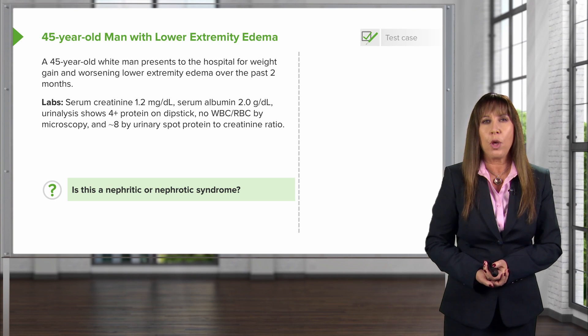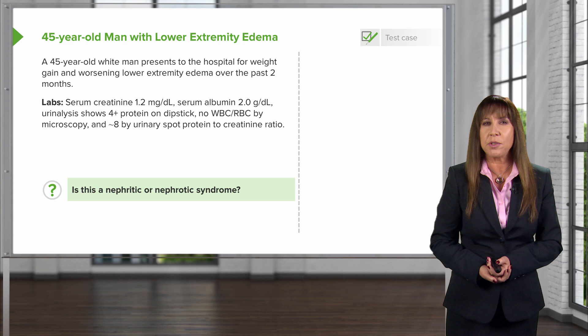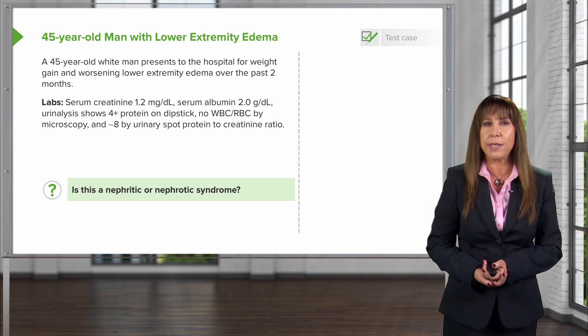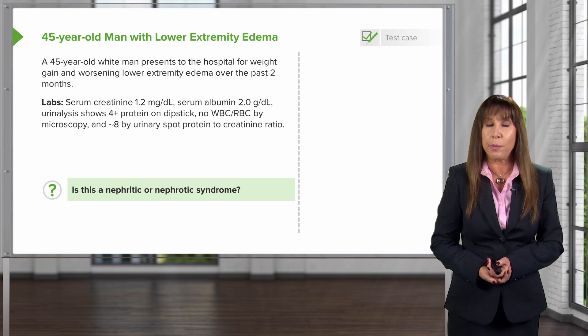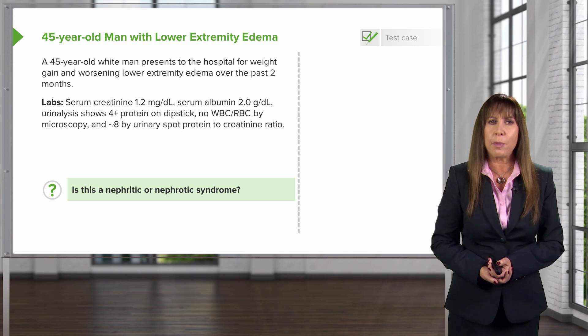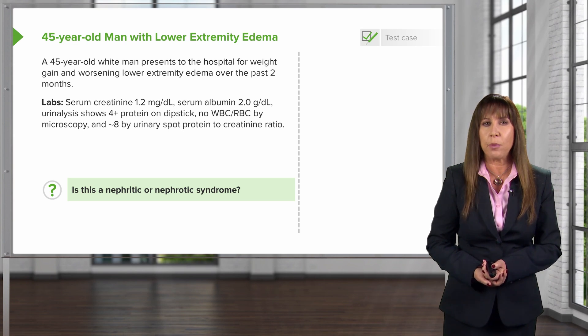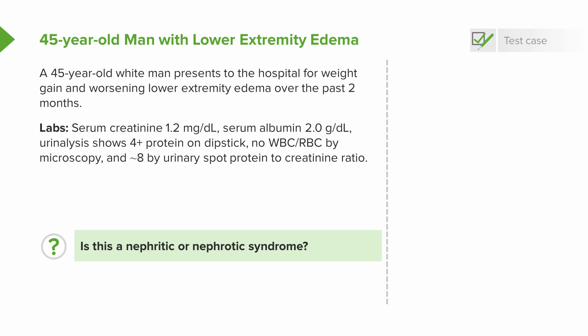We have a 45-year-old gentleman who presents to the hospital with weight gain and worsening lower extremity edema over the past two months. His laboratories are significant for a serum creatinine of 1.2 milligrams per deciliter. His albumin in the serum is low at two grams per deciliter. His urine analysis shows four plus protein on the dipstick, but there are no white cells or red cells by microscopy. He has about eight grams of protein estimated on a urinary spot protein to creatinine ratio. So the question is: is this nephritic or is this nephrotic syndrome? Let's look through our case and see if we can arrive at that diagnosis.